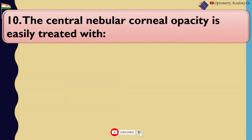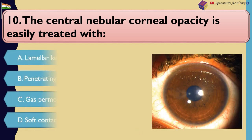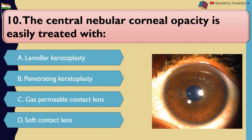The central nebular corneal opacity is easily treated with: A. Lamellar keratoplasty. B. Penetrating keratoplasty. C. Gas permeable contact lens. D. Soft contact lens.